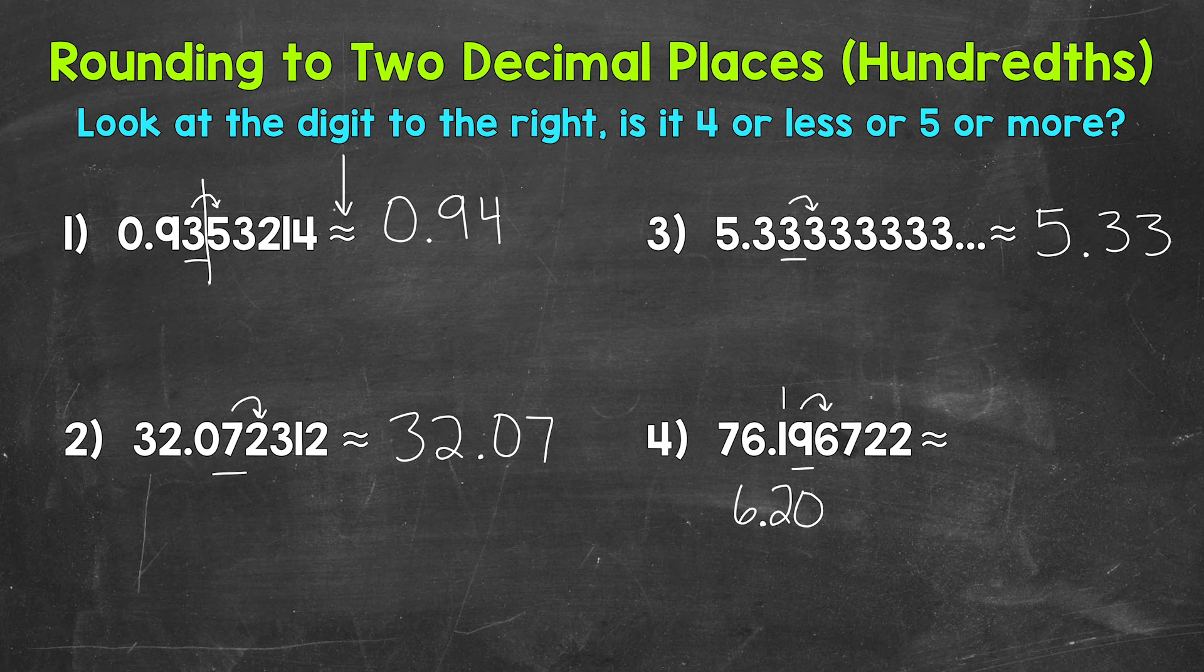A six in the ones and then a seven in the tens. So this decimal rounds to seventy-six and twenty hundredths. Now that's equivalent to seventy-six and two tenths, but I'm going to include that zero in the hundredths place to show that we rounded to the hundredths place.